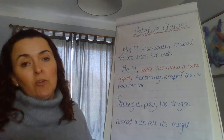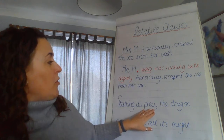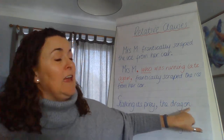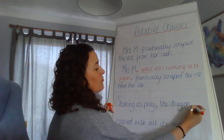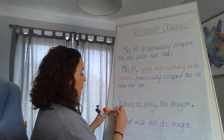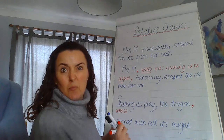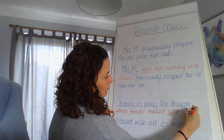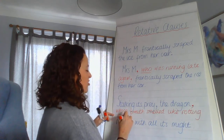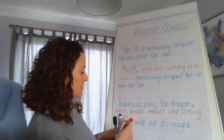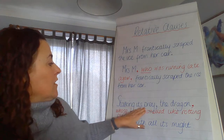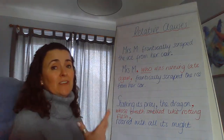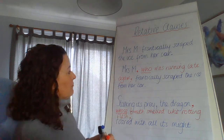Looking at the second example: 'Stalking its prey, the dragon roared with all its might.' I want to give more information about the dragon, so I'm going to use the relative pronoun 'whose': 'Stalking its prey, the dragon, whose breath smelled like rotting flesh, roared with all its might.' We've really up-levelled that sentence and given it a whole new meaning. I'm going to underline the relative pronoun so you can see it clearly.